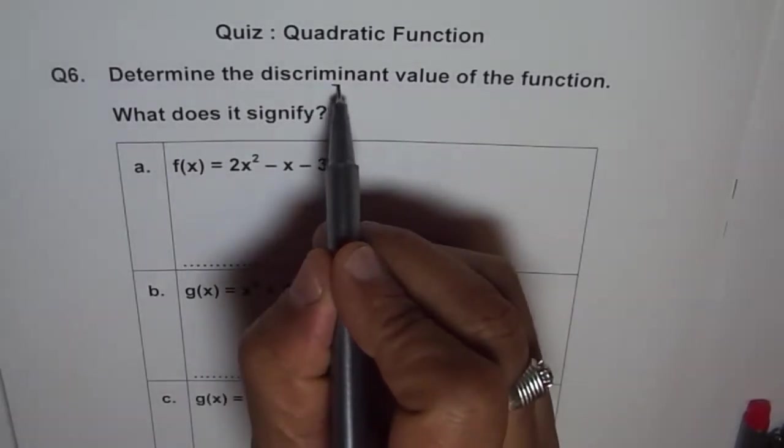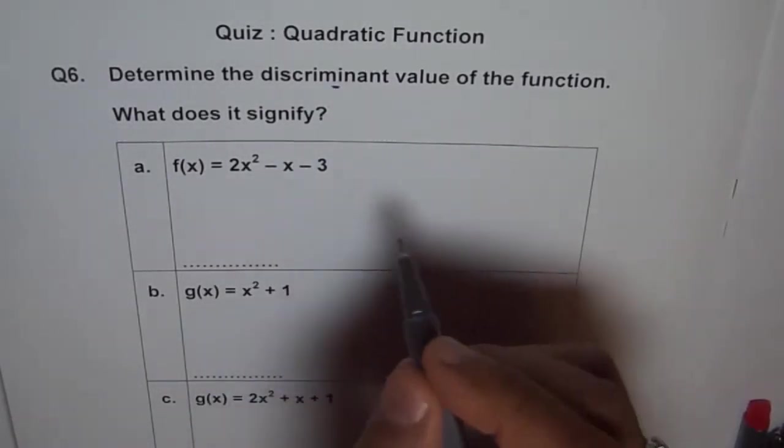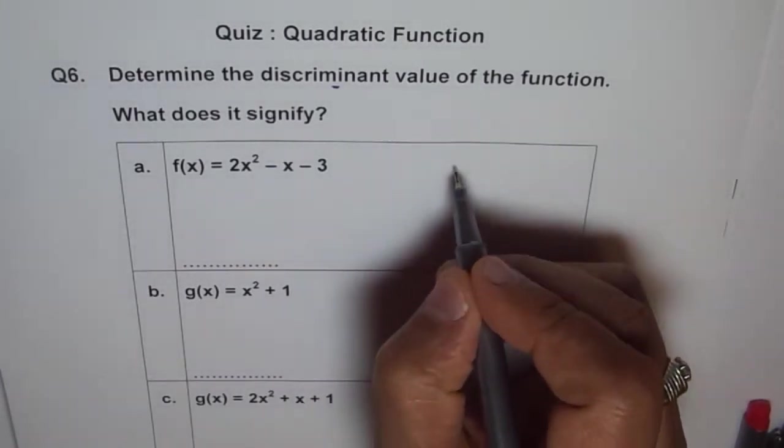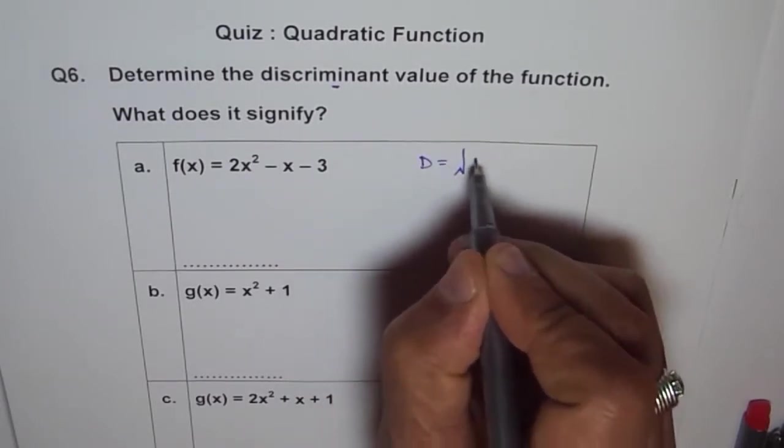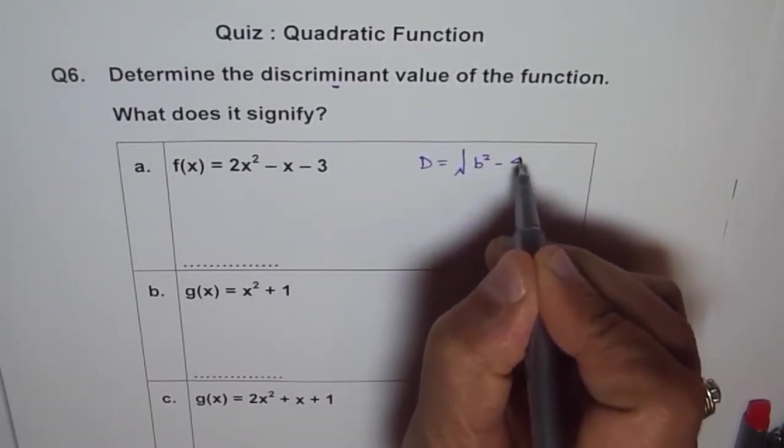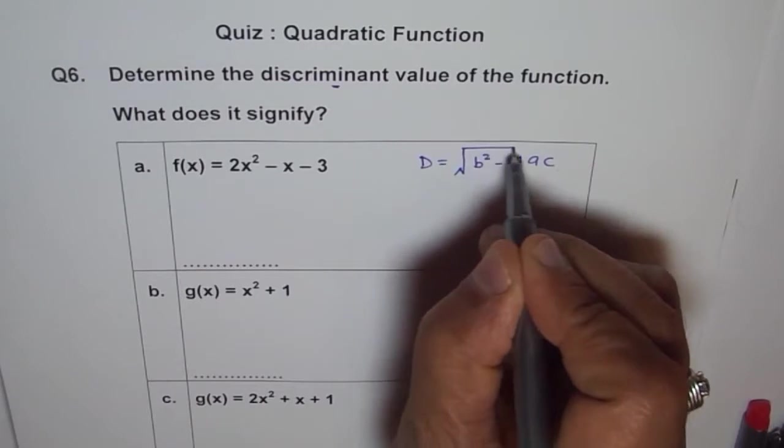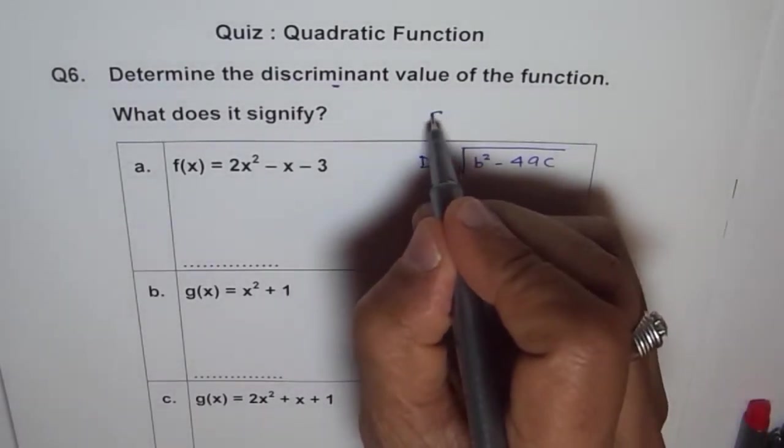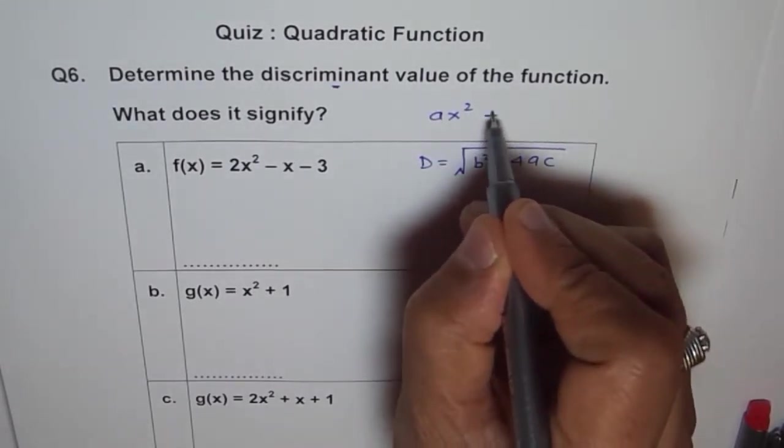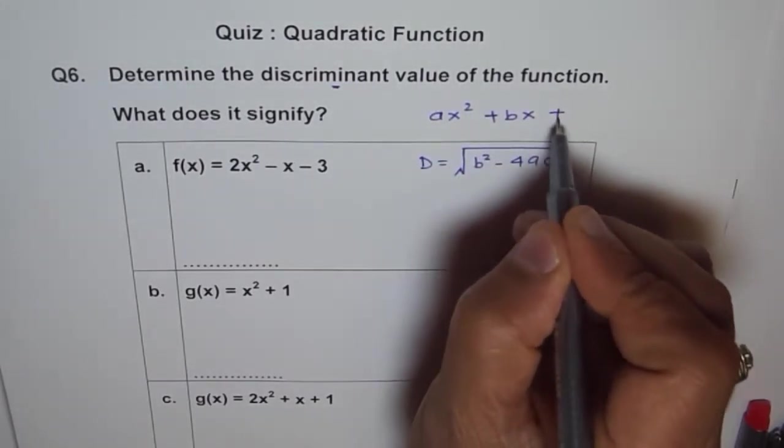What is discriminant value? We need to find b² - 4ac within the square root. So discriminant D is b² - 4ac. In general, the standard form is written as ax² + bx + c.